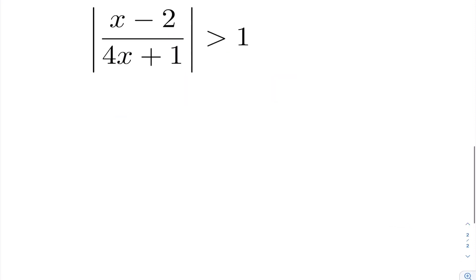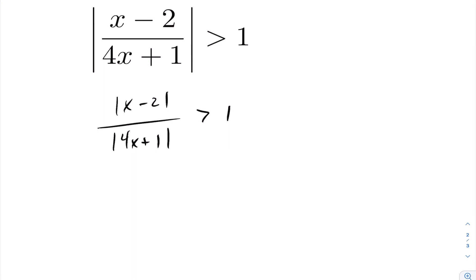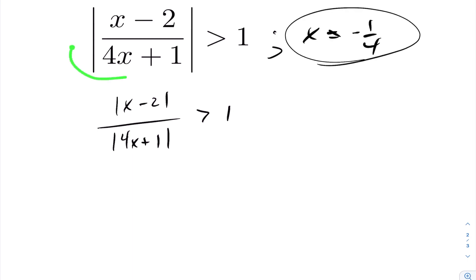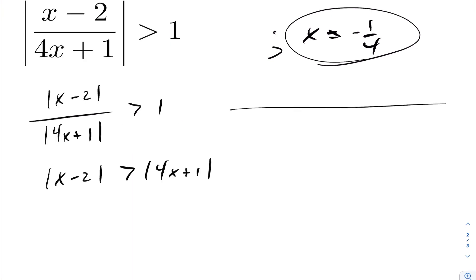In the next example we apply the absolute value rule again, giving us the following. Multiplying across by the absolute value of 4x plus 1: we know that absolute value is always positive, so it won't change the inequality sign. Also note implicitly that x cannot equal negative one quarter, else the original expression would be undefined. So with the absolute value it is strictly greater than zero, and we can safely multiply across.